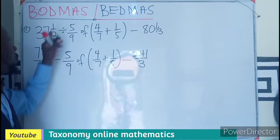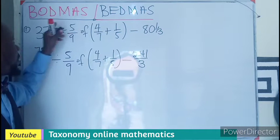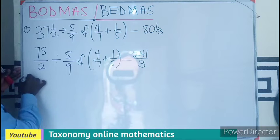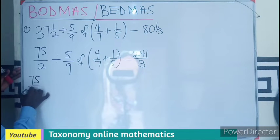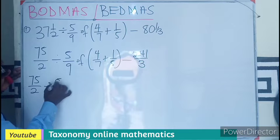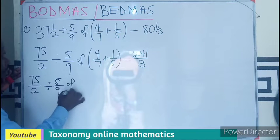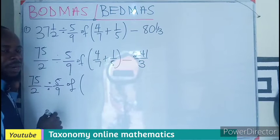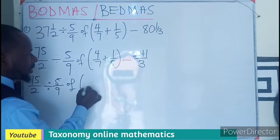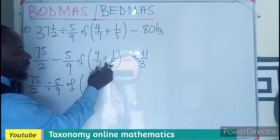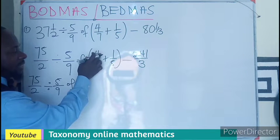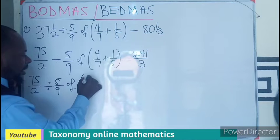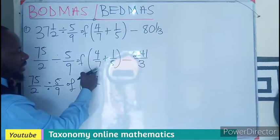Now we are going to operate on BODMAS. B first, so bracket. So I'll maintain my 75 over 2 divided by 5 over 9 of. In this bracket I look for my LCM which is going to be 35. So this will multiply this to give me 20, 20 plus 7, I'll have 27, this times this will be 35.